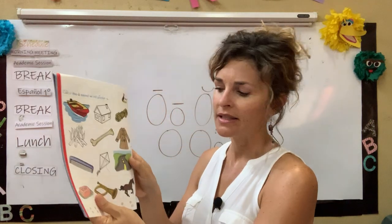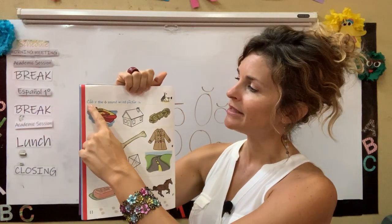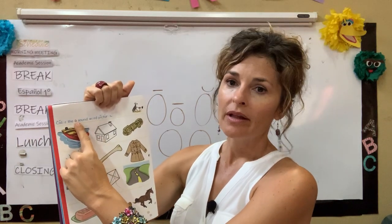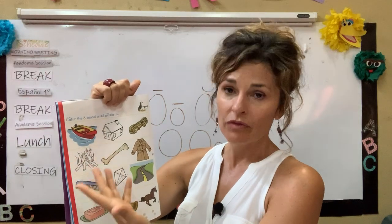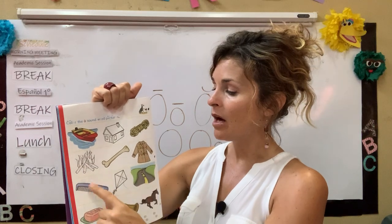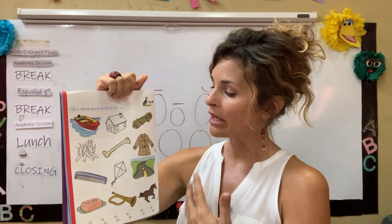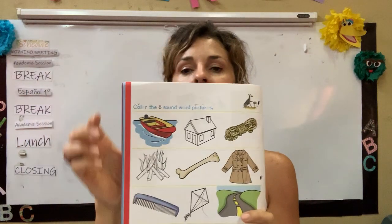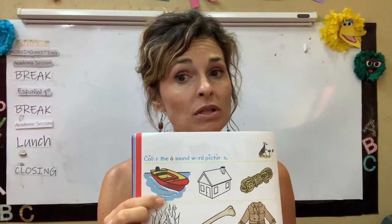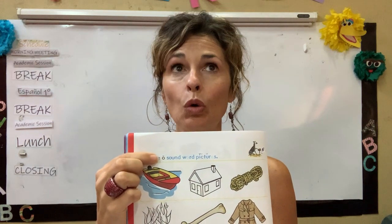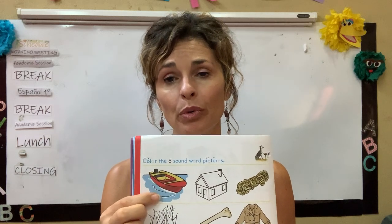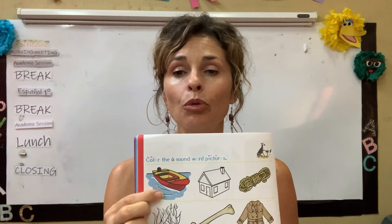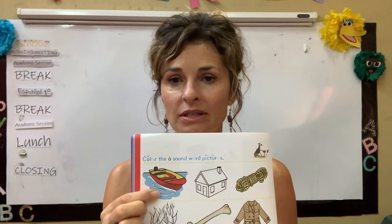So let's go to page 11. The instructions say: color the O-sound word pictures. Remember, this O is the O that says O-B-O-copy. Let's review the different things I see on page 11. The first thing is a boat. When I say 'boat,' I can hear the O sound — O-B-O-copy — so I'm going to color the boat. Yo voy a pintar mi bote porque cuando yo pronuncio 'boat,' yo puedo escuchar O-B-O-copy. Entonces sí, voy a pintarlo.